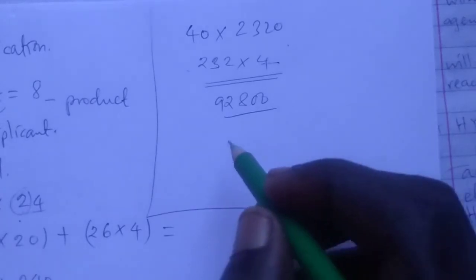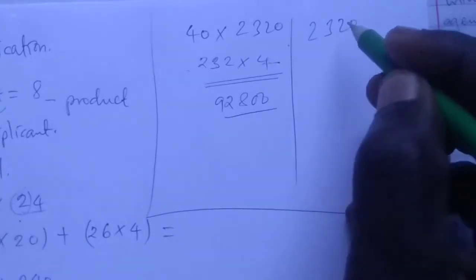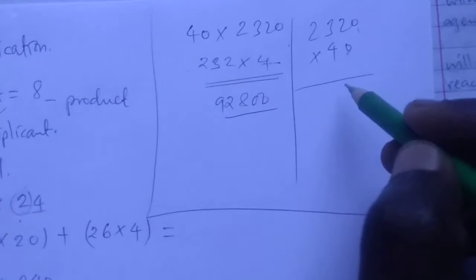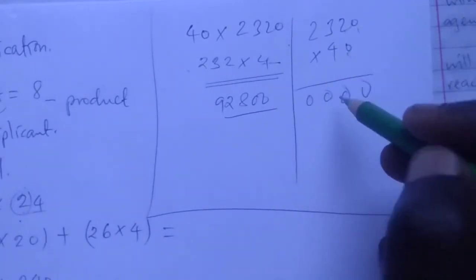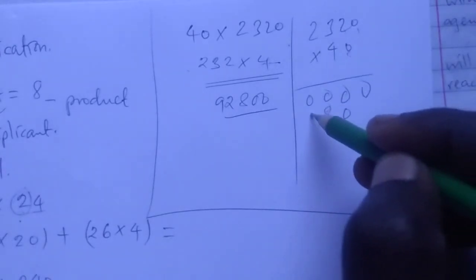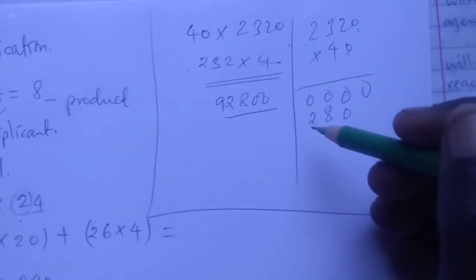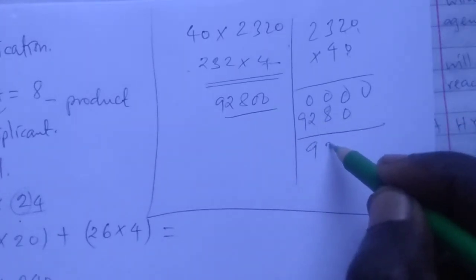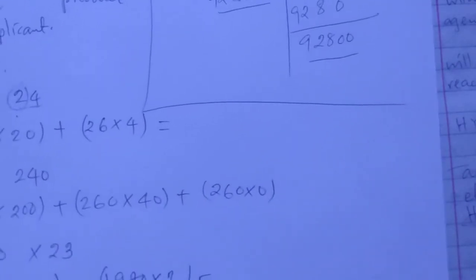This is the same as if someone took 2320 times 40. They would get 0 times 0 is 0, 0 times 2 is 0, everywhere they would get 0. Then 4 times 0 is 0, 4 times 2 is 8, 4 times 3 is 12 with a remainder of 1, 4 times 2 is 8 plus 1 is 9. Finally, 92800 is the answer to our question.